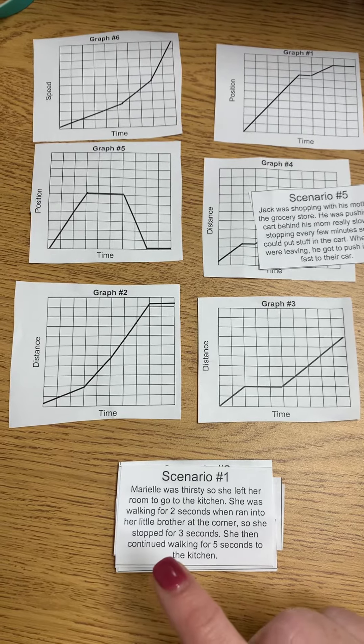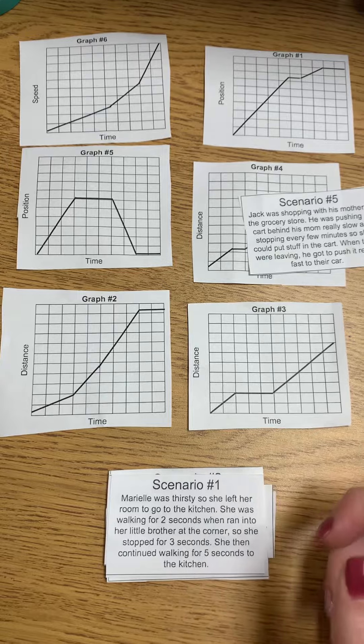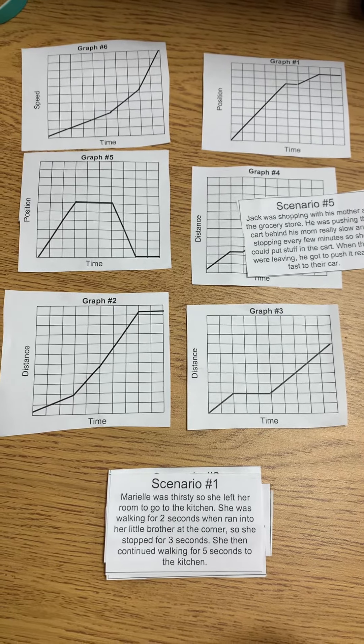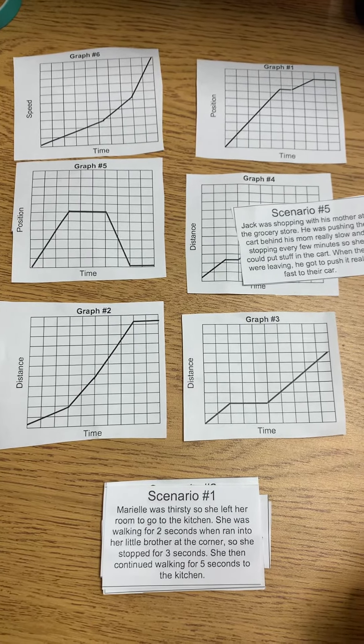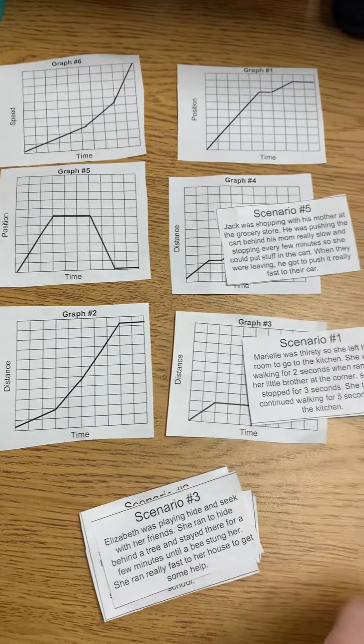So she's walking, walking, walking, and she runs into her brother. So it makes her stop. And then she continues on her path walking to the kitchen. So which one shows she's walking and she stops and then she continues with her journey? Graph number three. So there we go for that one.